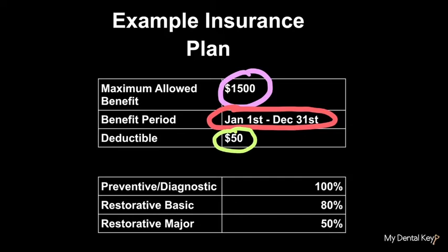The deductible is the amount the patient must pay for dental treatment before the insurance covers the patient for a specific procedure. The procedures that require the patient to pay their deductible prior to treatment being covered can vary, but most often a deductible must be paid before a restorative procedure is covered, whether basic or major. Dental plan deductibles commonly range from $25 to $100, and there is no need to worry about the deductible after it's been paid for that benefit period.